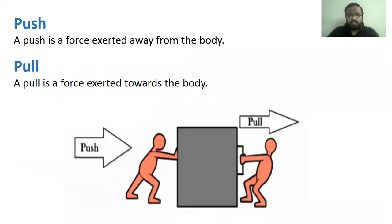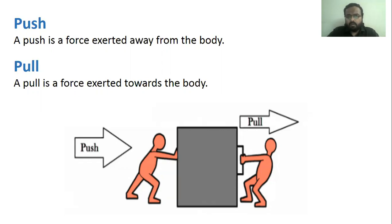Now what is a push and what is a pull? A push is a force exerted away from the body — when a force is exerted away from the body, it is called a push. Similarly, a pull is a force exerted towards the body — when a force is exerted towards the body, it is called a pull.